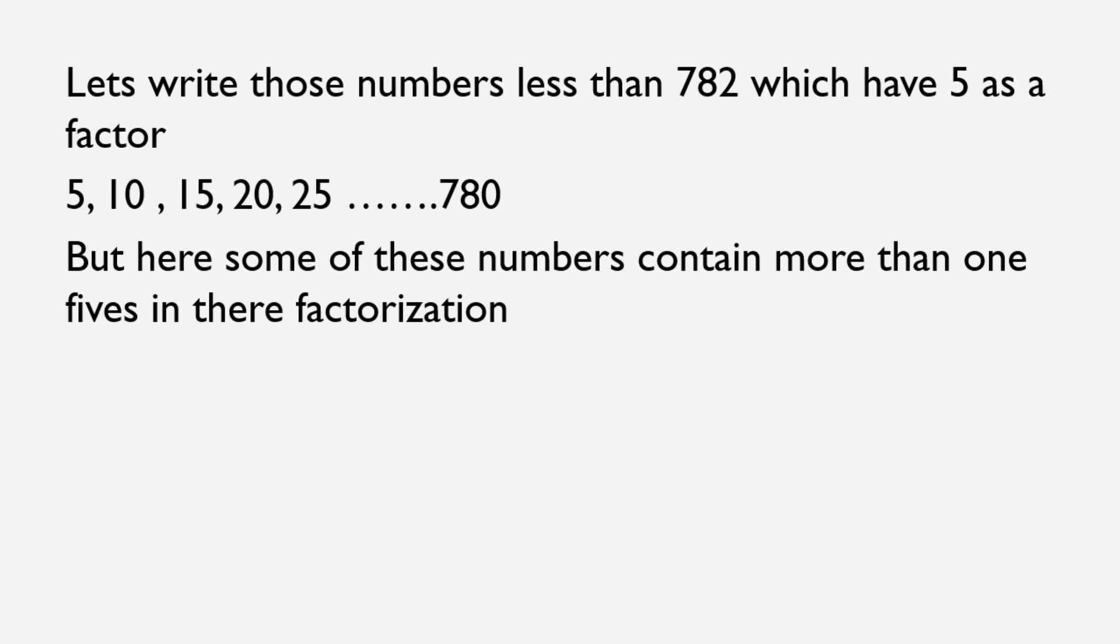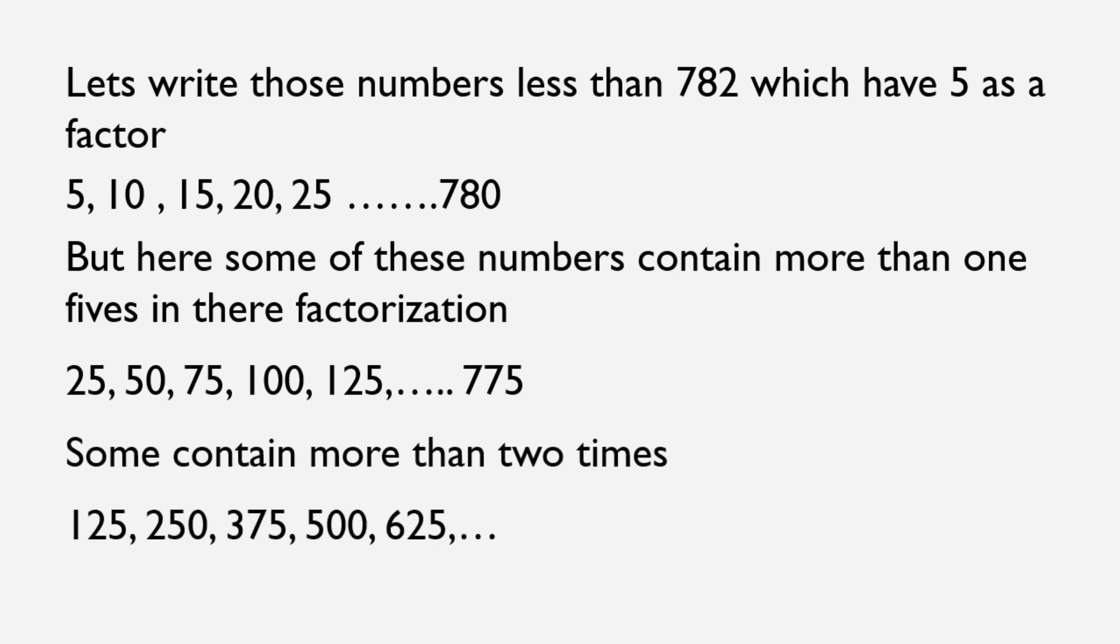Some numbers contain 5's more than once, like 25, 50, 75. So the number of these numbers must be added 2 times. But we have already counted these numbers in our first series once, so we need to add the number of these numbers only once. And again, some of these numbers contain 5 as a factor more than 2 times, and this keeps going.